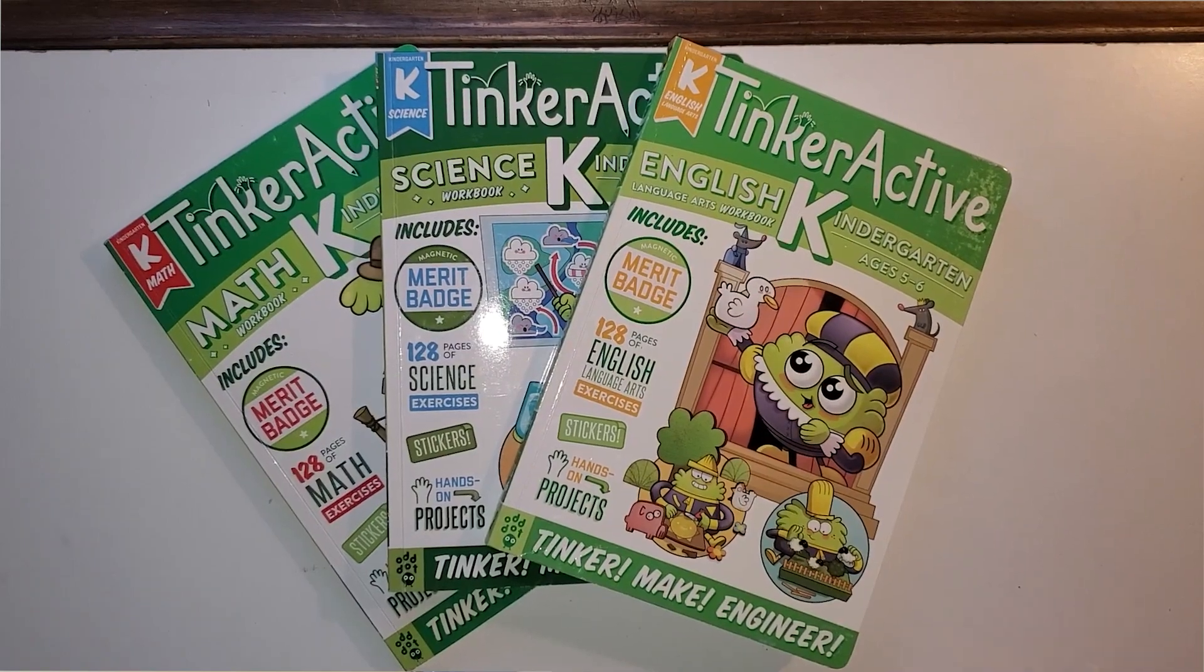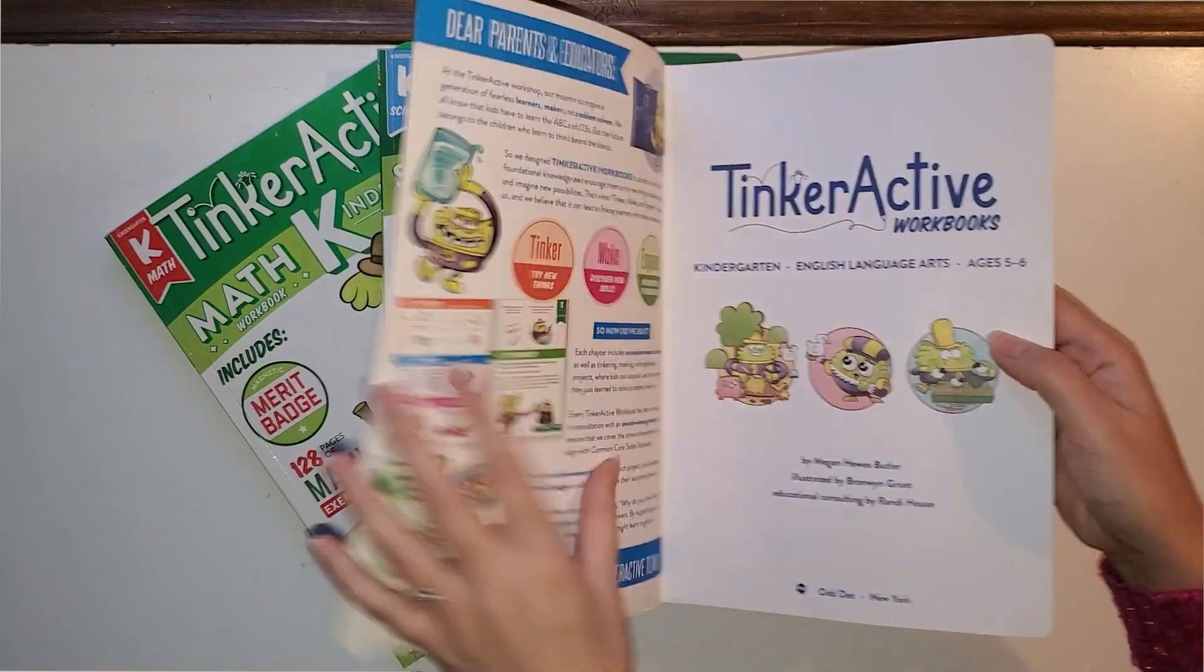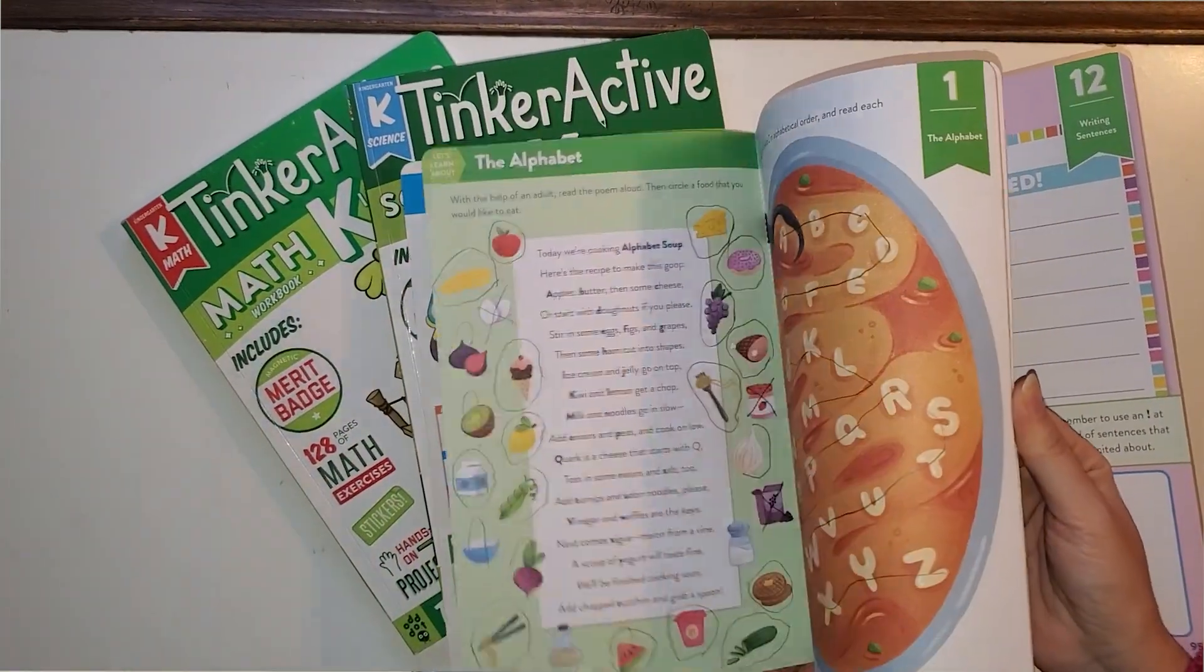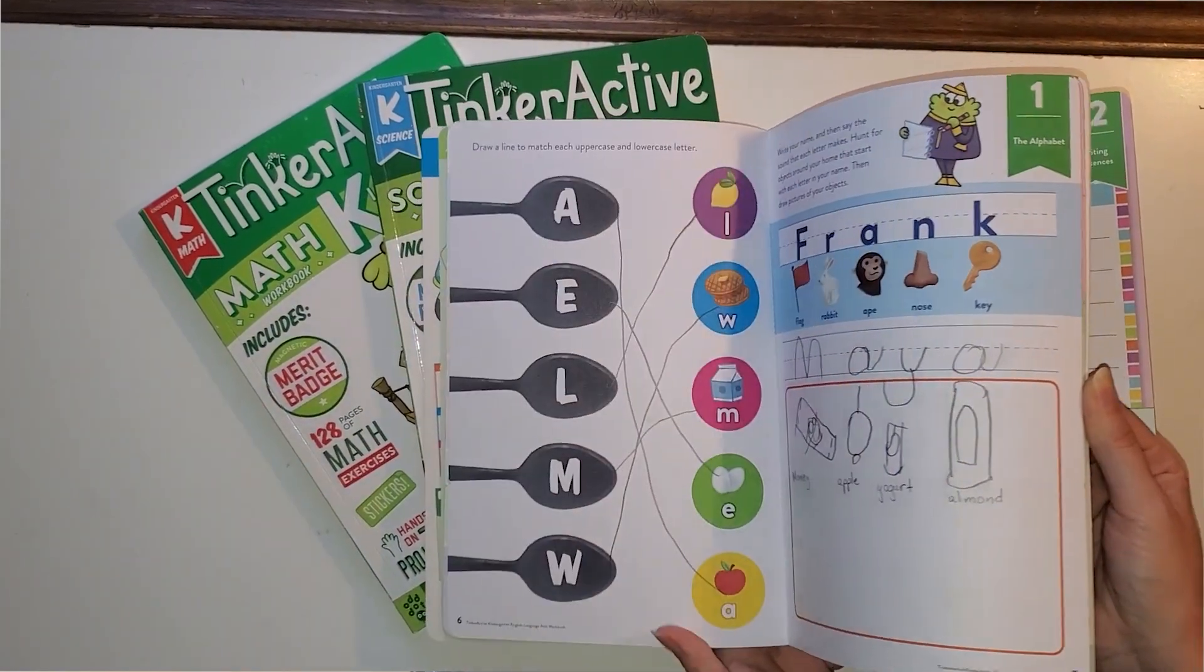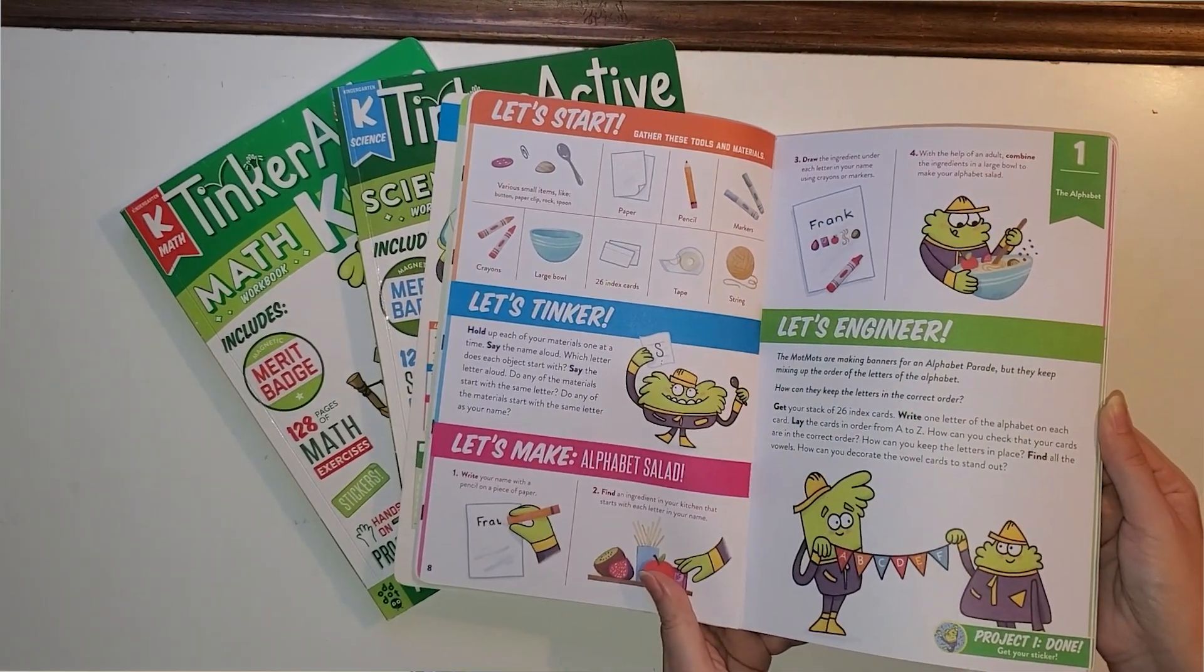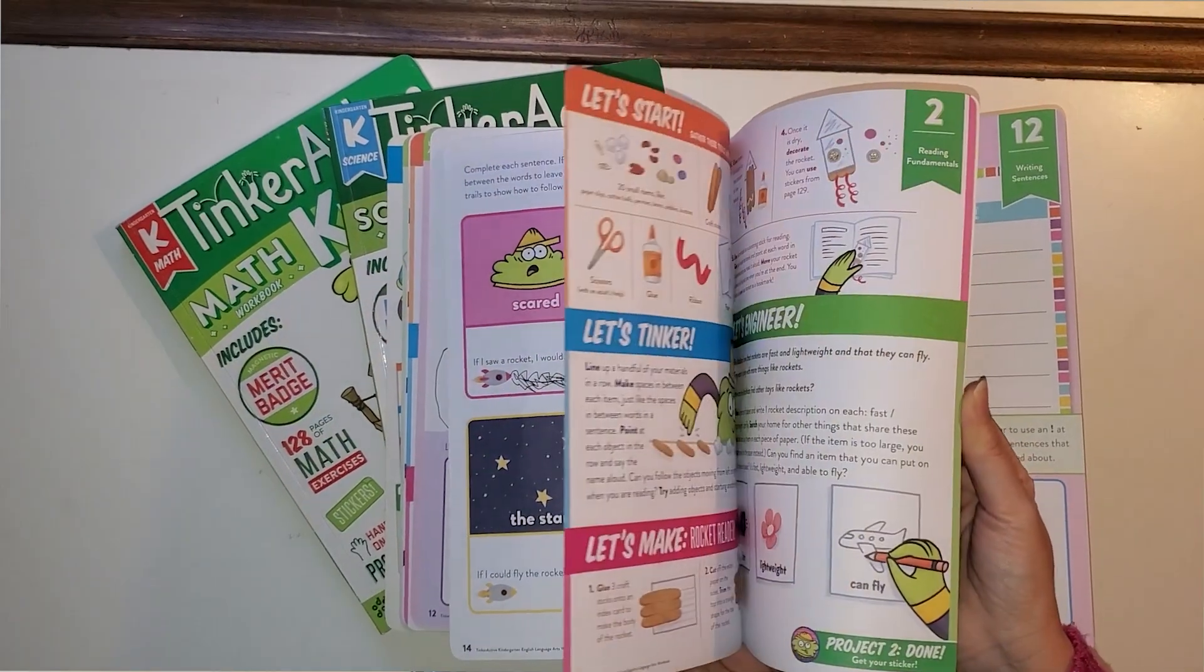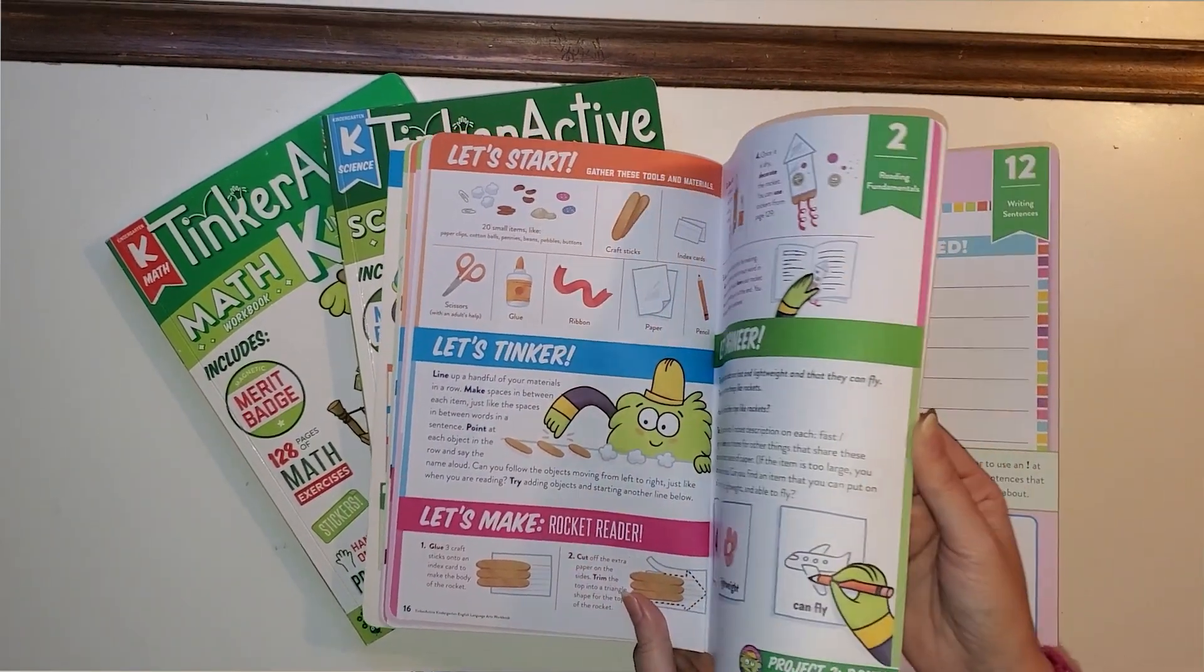Another really fun resource for kindergarten are Tinker Active workbooks. My daughter really just loves these books. They're very hands-on. Every lesson has an activity at the end. They're simple activities. It says, let's tinker. Let's make something.